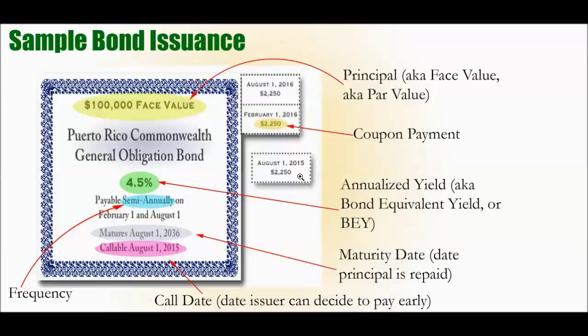The coupon payment is shown on the right side. Two times a year, investors who hold this bond — who lent the Puerto Rican government $100,000 — will get a payment of $2,250. So in the course of a year, they're going to get $4,500, which equals 4.5% of the face value. That's where the 4.5% comes in: it's the sum of the coupon payments in the course of the year divided by the face value.